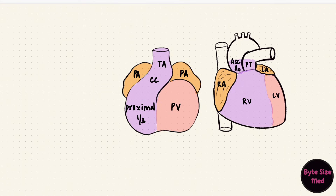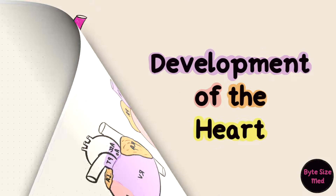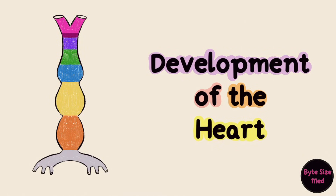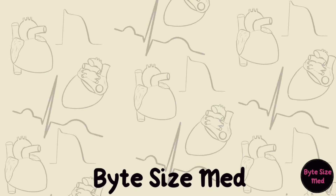In part 2 we'll look at how the two atria develop. But that was all on the heart tube. I hope this video was helpful — if it was, you can give it a like and subscribe to my channel. Thanks for watching and I'll see you in the next one.